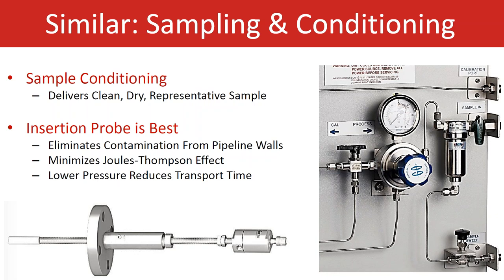On the right side you'll see an example of a sample conditioning system for the tape, which basically consists of a membrane filter, a pressure regulator to regulate pressure down to 15 PSIG, and some valves for switching between different streams or between calibration and sample gas when required. Another important thing to consider is the probe itself — the probe typically extends to the middle one-third of the pipeline just to avoid extracting any contaminations from inside the pipeline. We drop the pressure right at the sample point, usually at the probe tube where the gas temperature is likely higher, to minimize any Joule-Thomson effect. Keeping the sample at lower pressure also reduces sample transfer time and minimizes any chance of condensation.